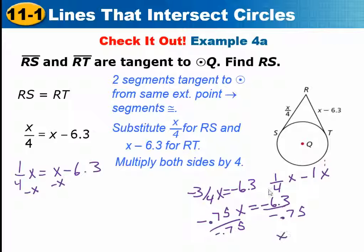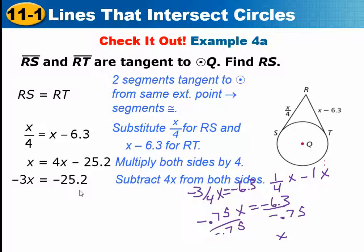Their way of doing it, you will get rid of the fraction, which is the 4. And then you will have... It will go like this. And then you would subtract 4X from both sides and get negative 3X. Divide by negative 3 to get 8.4. You'll get the same answer either way. There's more than one way to solve equations. Now, once we find X, you have to plug it back in to find RS right here. So it would be 8.4 divided by 4 is 2.1.